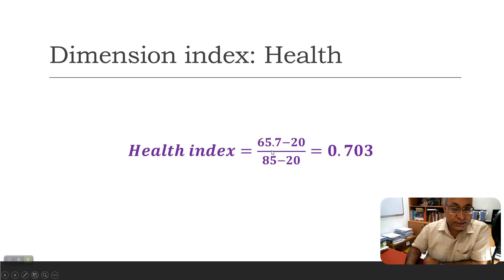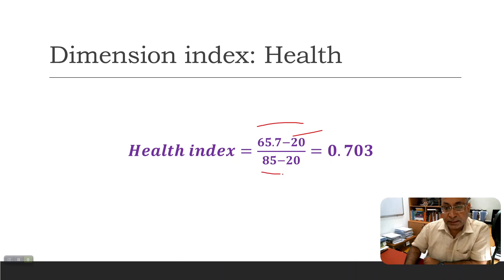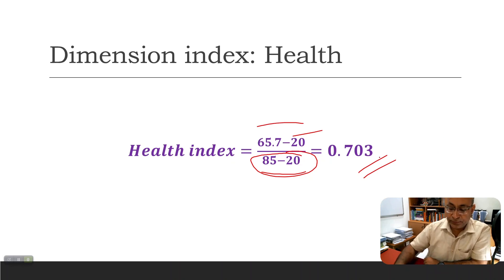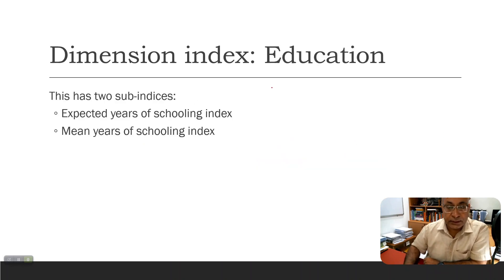First, the health index. Guyana has a life expectancy at birth of 65.7, while the bare minimum is 20. We compute the numerator and divide by the denominator — maximum 85 minus minimum 20 — and we get a health index value of 0.703.